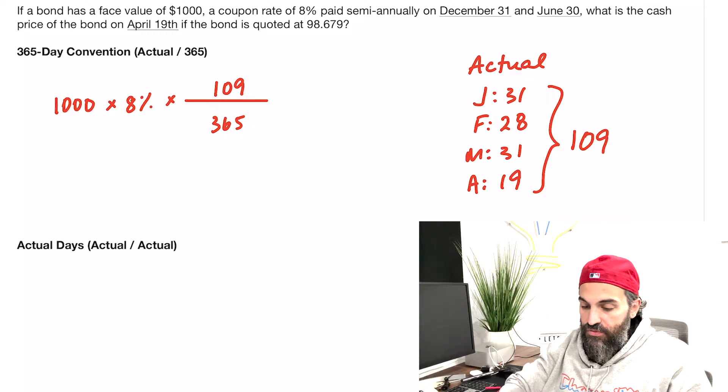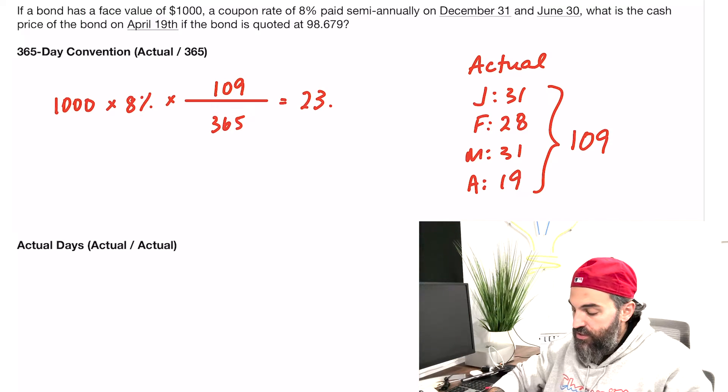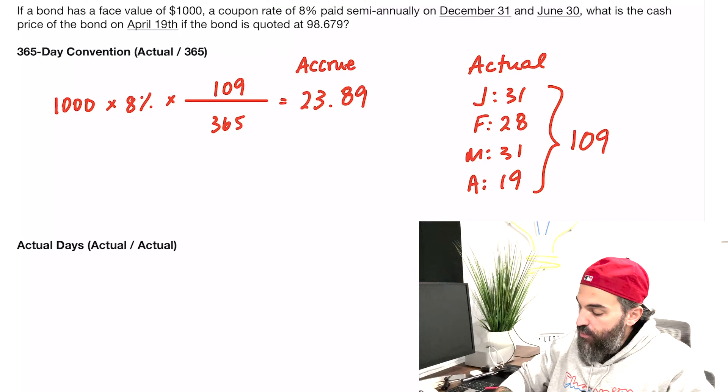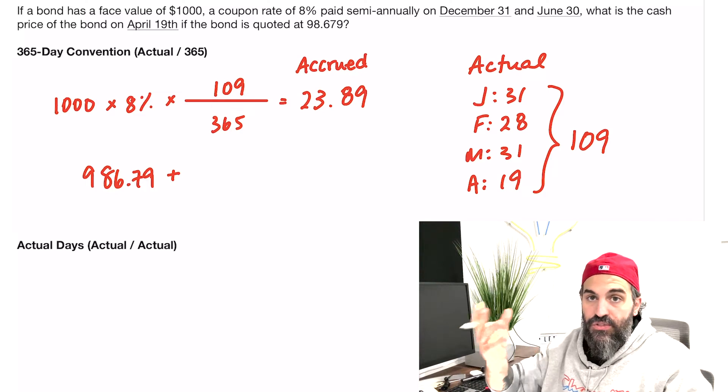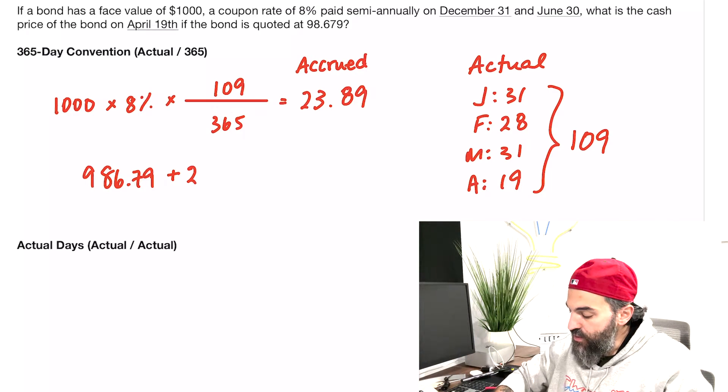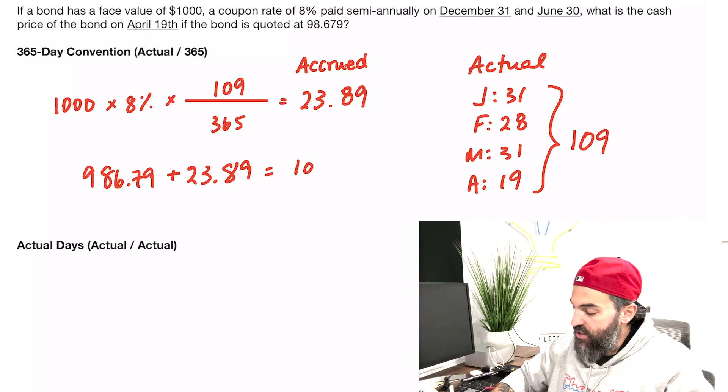This gives us our accrued interest. If I punch this whole thing into my calculator, that is $23.89 of accrued interest. The quoted price at 98.679 means $986.79. Remember that a quote is just a percentage of the face value. Adding $986.79 to my accrued interest, I get a cash price of $1,010.68.